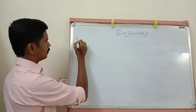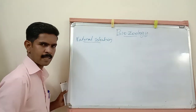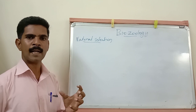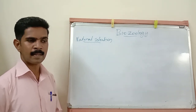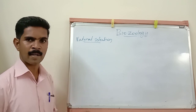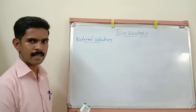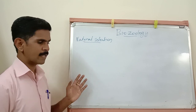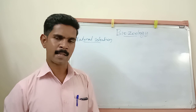Our next topic is natural selection. When an organism develops an adaptation, it can survive on Earth because nature selects organisms based on adaptive characters. If adaptive characters are present in the body of an organism, that organism is selected by nature, and only that organism can produce more offspring and increase its population.